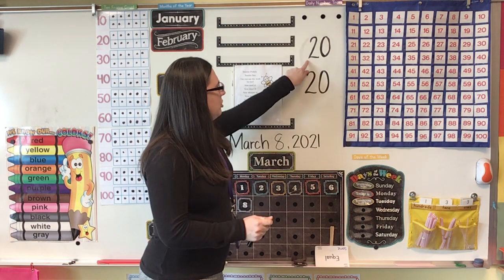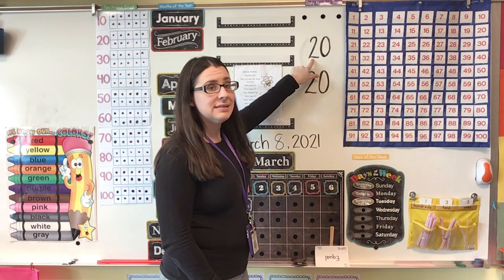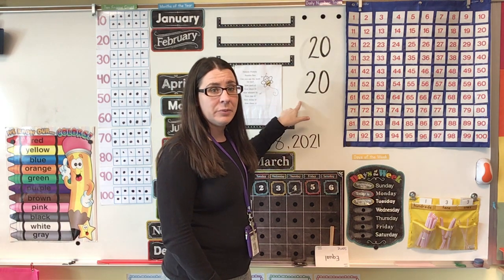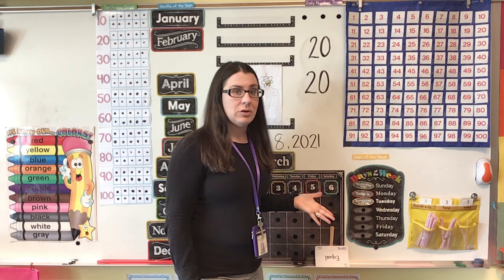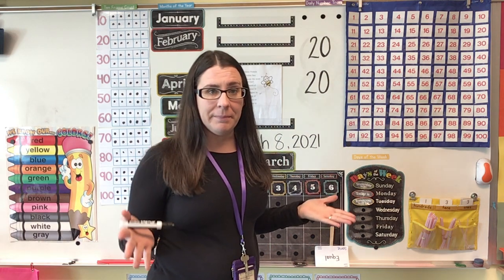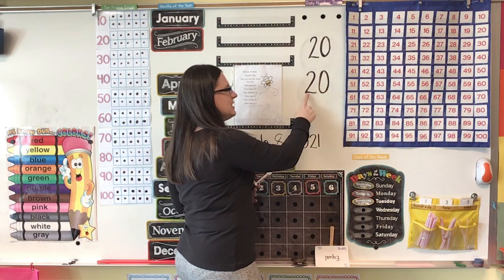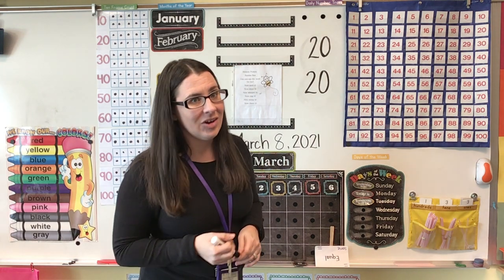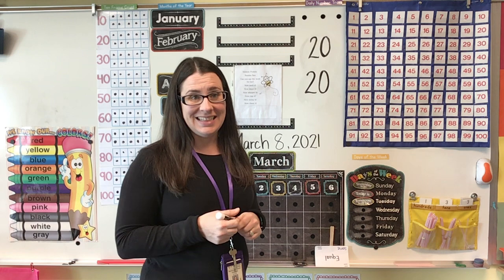Up here you can see I've got two numbers written. What number is this? 20. And what number is this? 20. Let's compare those two numbers — what do you notice about them? They are equal, aren't they? They are the exact same number. Since they are the same, that means they are equal. Neither one is more or less than the other one.